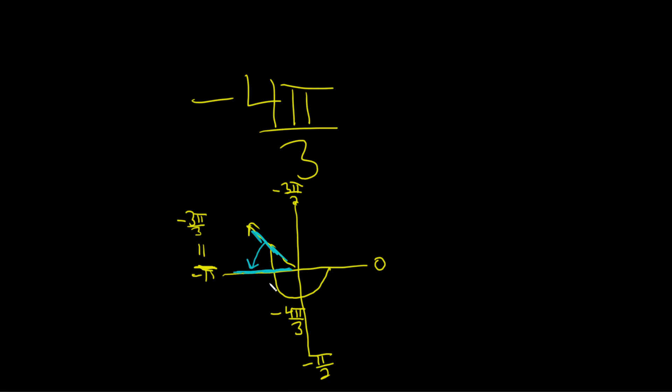So what is that distance? Well we know that to get to negative 4 pi over 3, we took negative pi and traveled pi over 3. So this is just pi over 3, so our reference angle would be pi over 3.